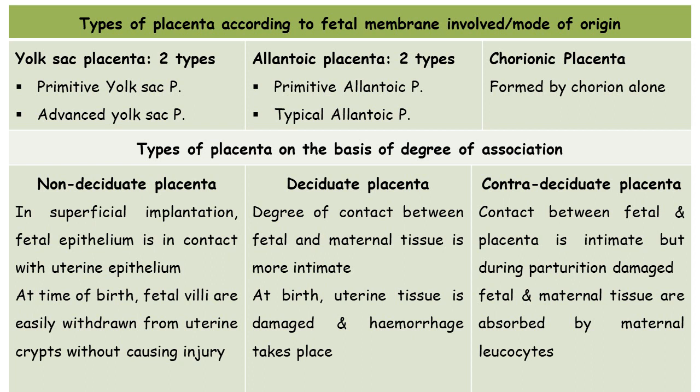In deciduate placenta, the degree of contact between the fetal and maternal part is very intimate. The wall of the uterus is eroded to various degrees by chorionic villi, which erode deep into the endometrium. At the time of parturition, a variable amount of uterine tissue is damaged because of the intimate connection between fetal and maternal parts. This results in bleeding at the time of birth. This type of placenta is called deciduate, and the example is humans.